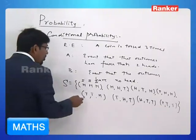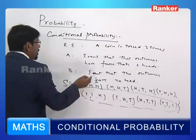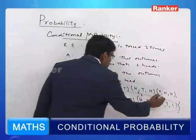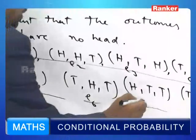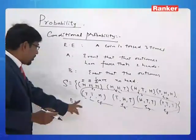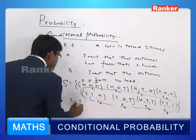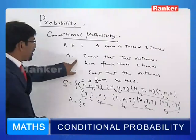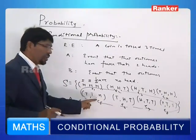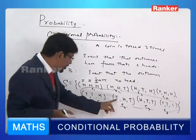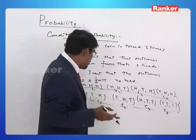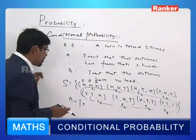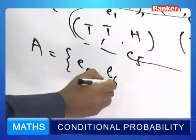Observe that these sample points correspond to events A and B. Let us call them sample points E1, E2, E3, E4, E5, E6, E7, E8. E5, E6, E7, and E8 correspond to event A — the event that the outcomes have fewer than two heads, that is, one head or no head at all. These four cases are all corresponding to fewer than two heads.